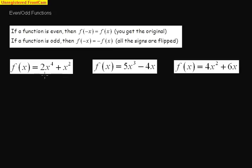f of x is equal to 2x to the fourth plus x squared. So if I evaluate that now for f of negative x, that means wherever I see an x, I'm going to plug in a negative x. So I have 2 times negative x to the fourth plus negative x squared.